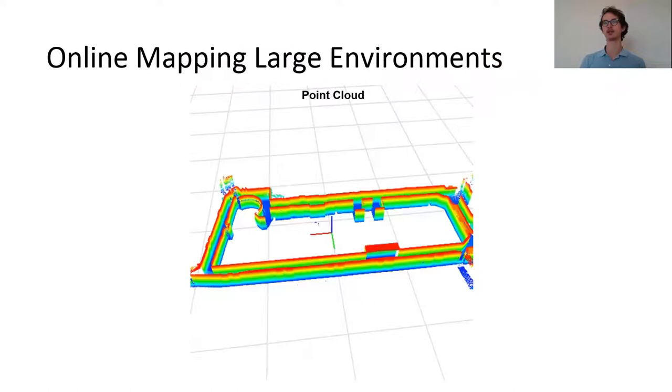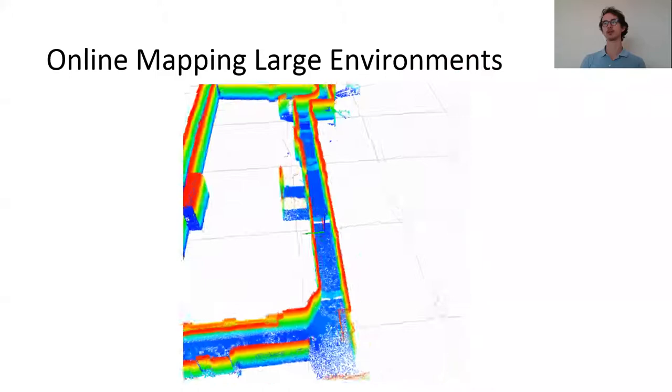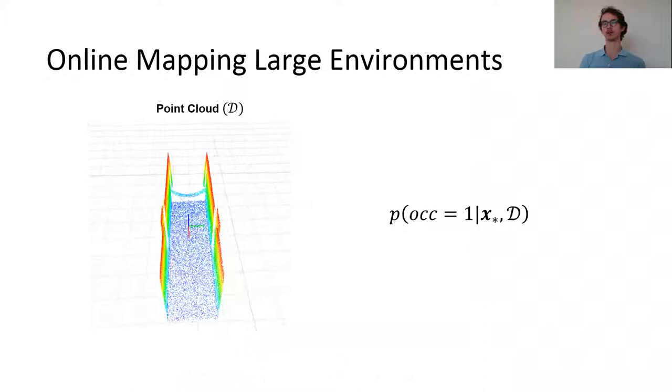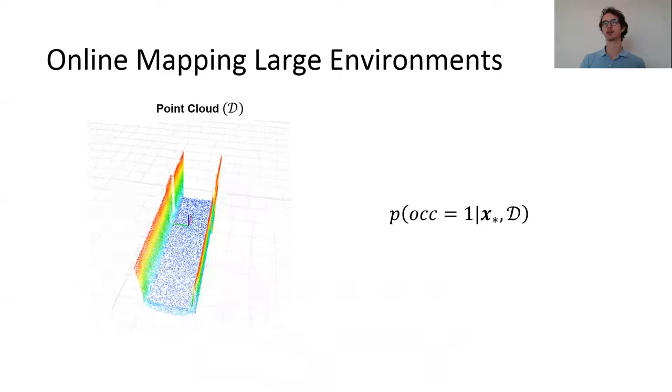Consider the problem of estimating which areas are occupied and which are navigable using a LIDAR point cloud. Let's focus on a small part of the environment. What we are interested in is estimating the occupancy probability of an arbitrary point X star in the environment given the point cloud D.